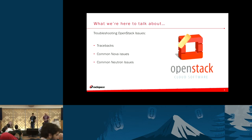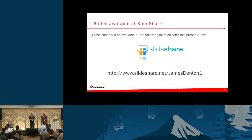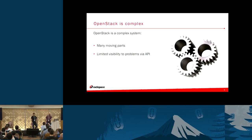What we're here to talk about is troubleshooting some common OpenStack issues — that includes tracebacks, some common Nova issues, and common Neutron issues. After the presentation we will upload these slides to SlideShare at the link you see there. We've got a lot of slides and a lot of ground to cover, so we apologize if we talk a little quickly, but we want to make sure we get through everything, and if we have time we'll do some Q&A.